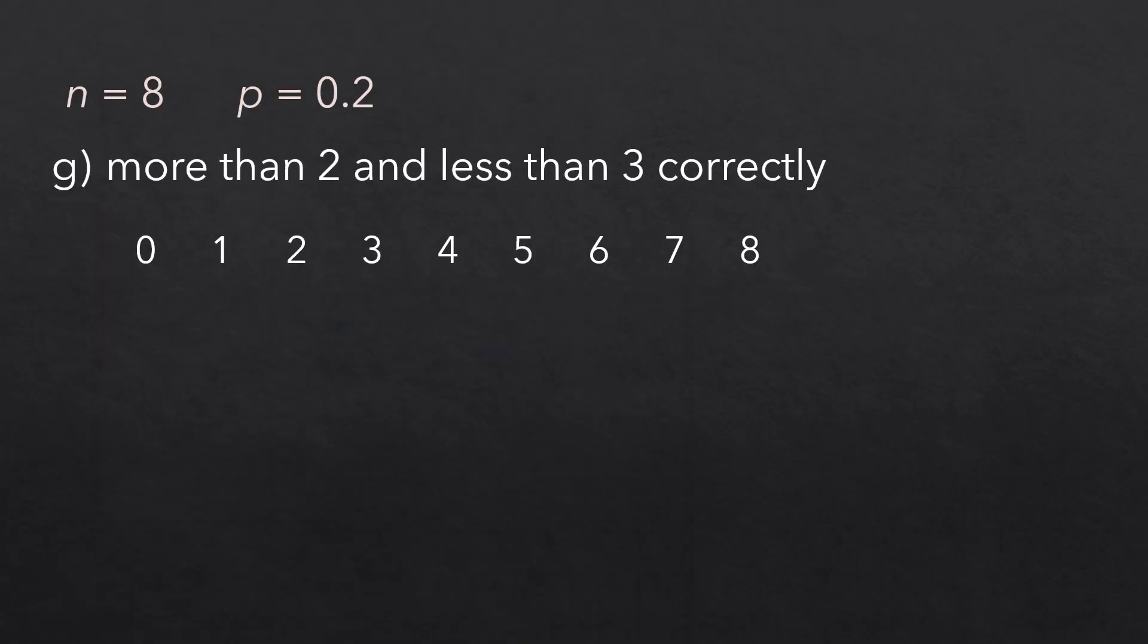For part g, we're considering the probability of more than 2 and less than 3 successes. Since this is a discrete probability distribution, there is a gap between 2 and 3. So there are no points more than 2 and less than 3. Therefore, the probability that x is between 2 and 3 is 0.